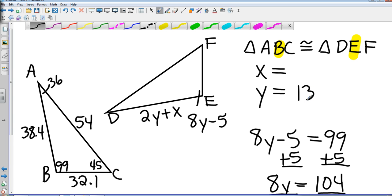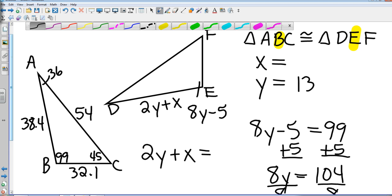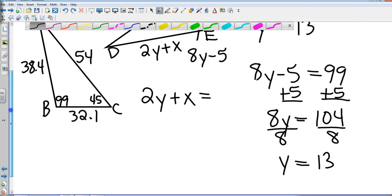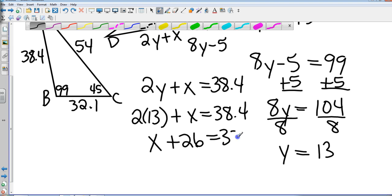So now I can use that in the second one. I'm going to use 2Y plus X, and I need to know what side that's equal to. Okay, so going back to my original one, DE - that's the first two on the right-hand side - is going to be equal to AB. So I go over to AB, and I see that that is 38.4. I substitute what I already know. I know Y is 13, so that's going to be 2 times 13 plus X equals 38.4. So that gives me X plus 26 equals 38.4.